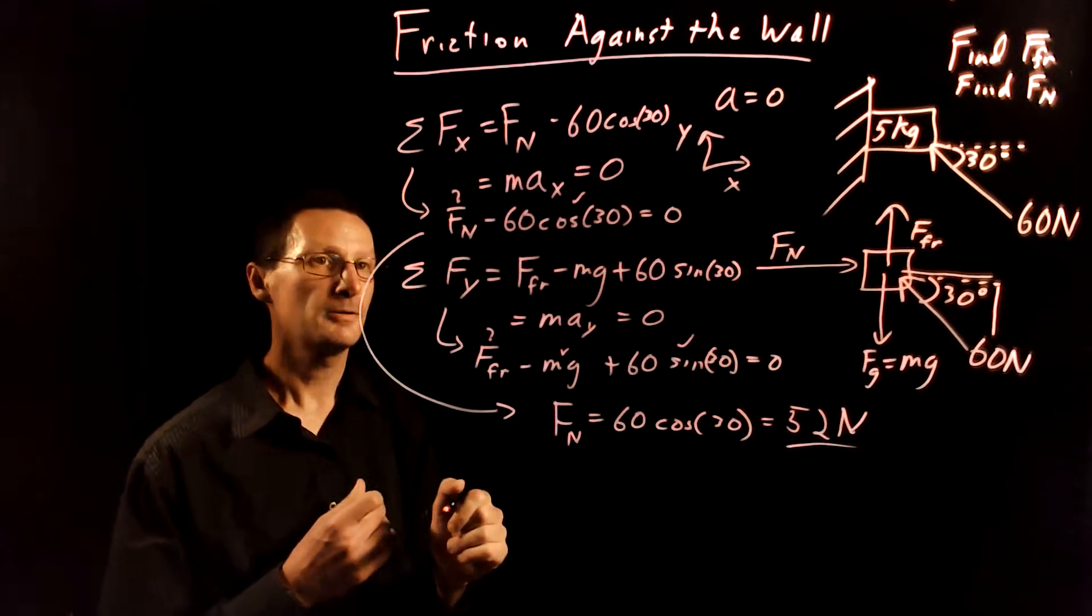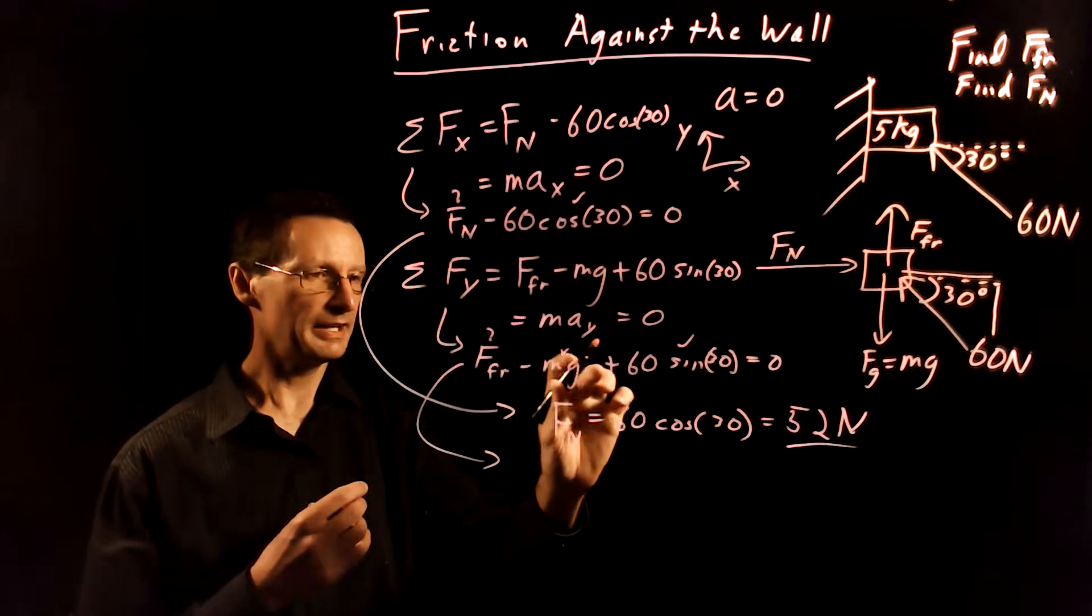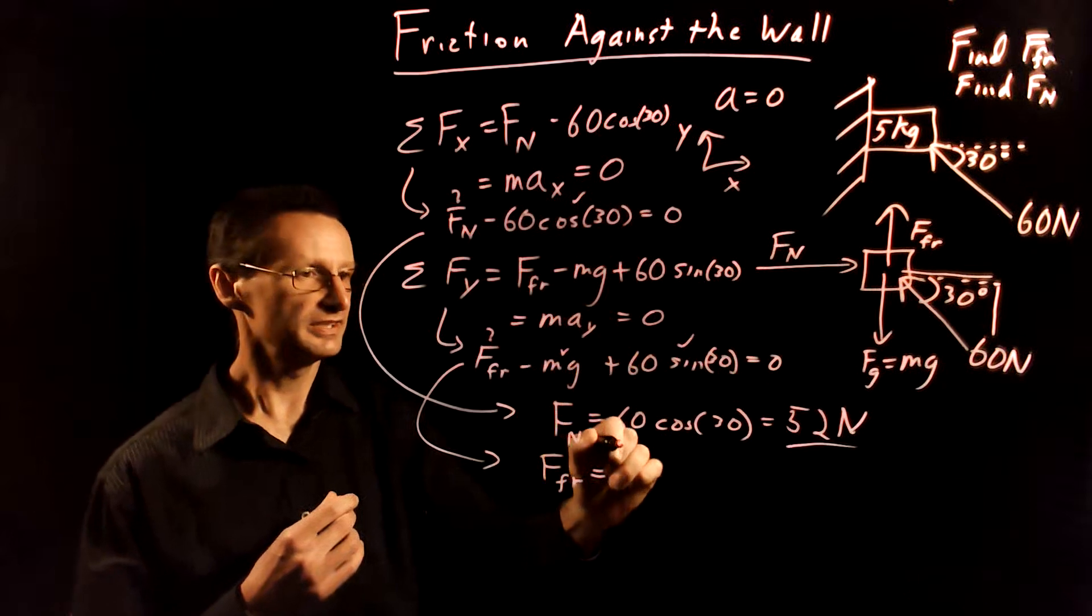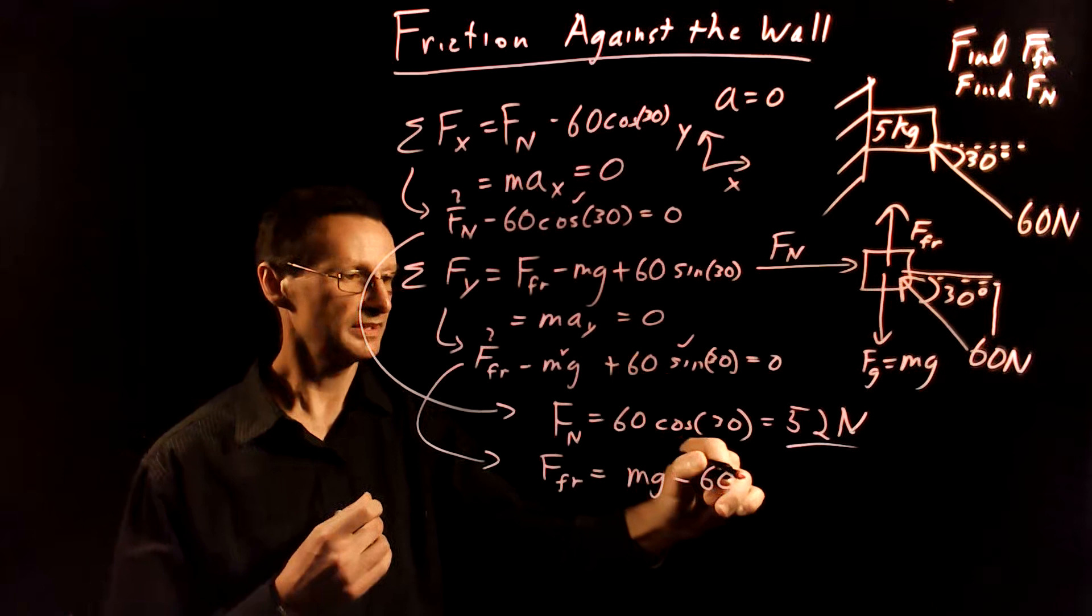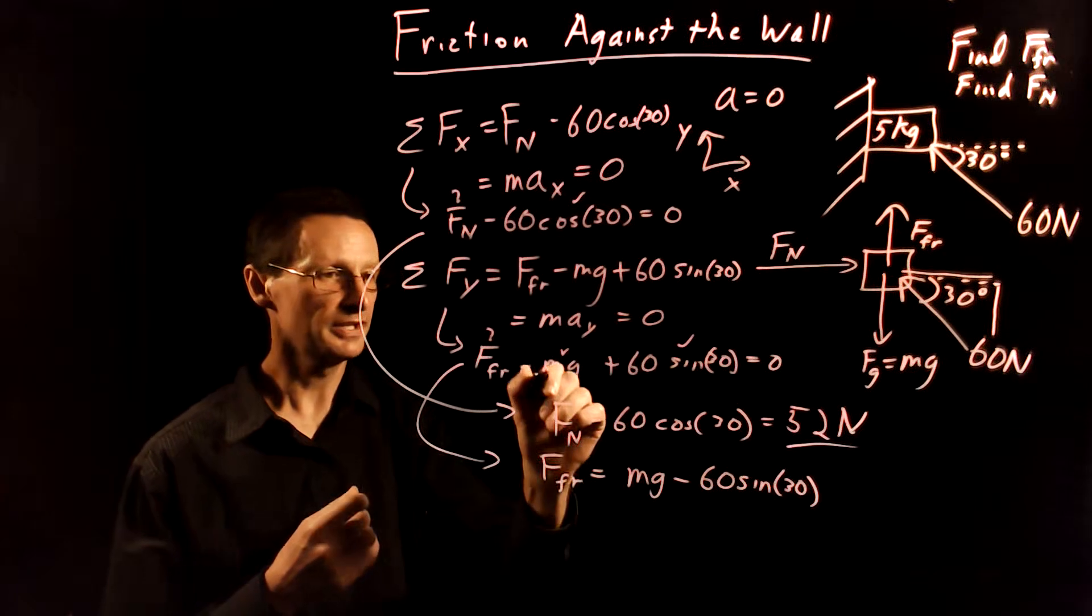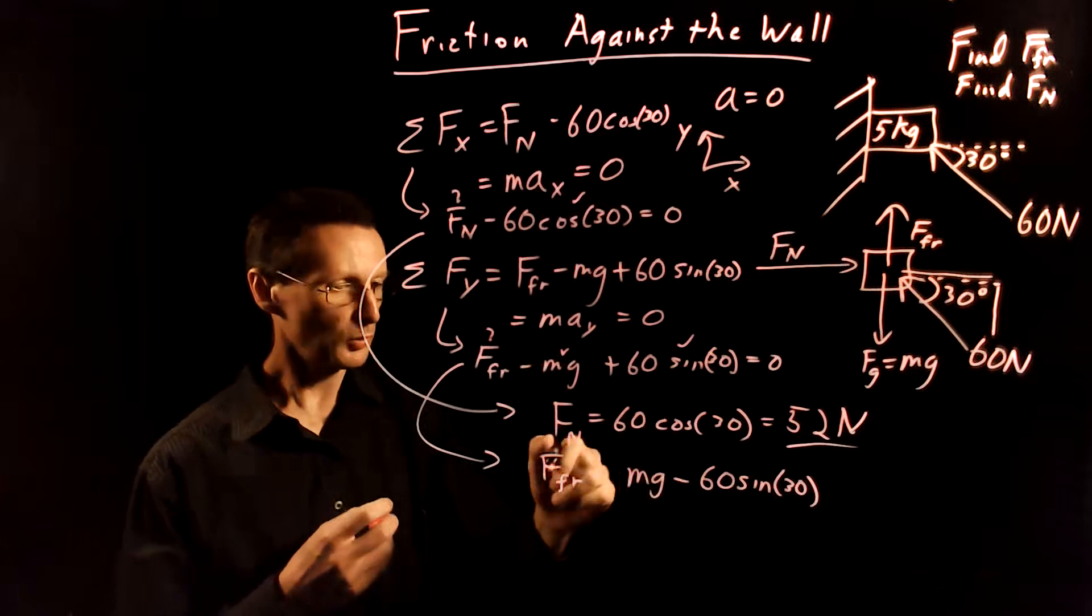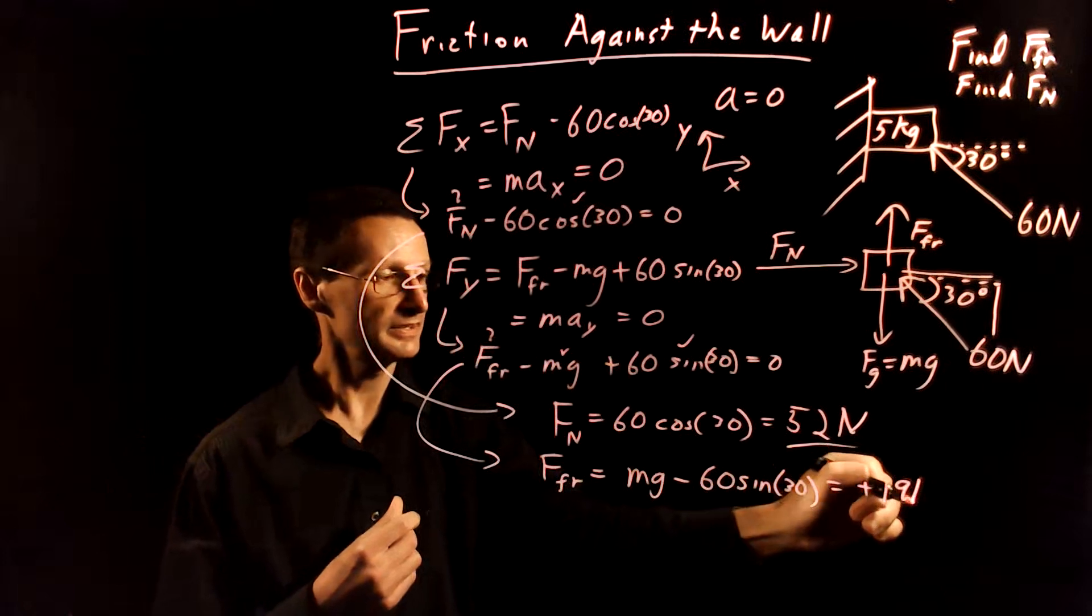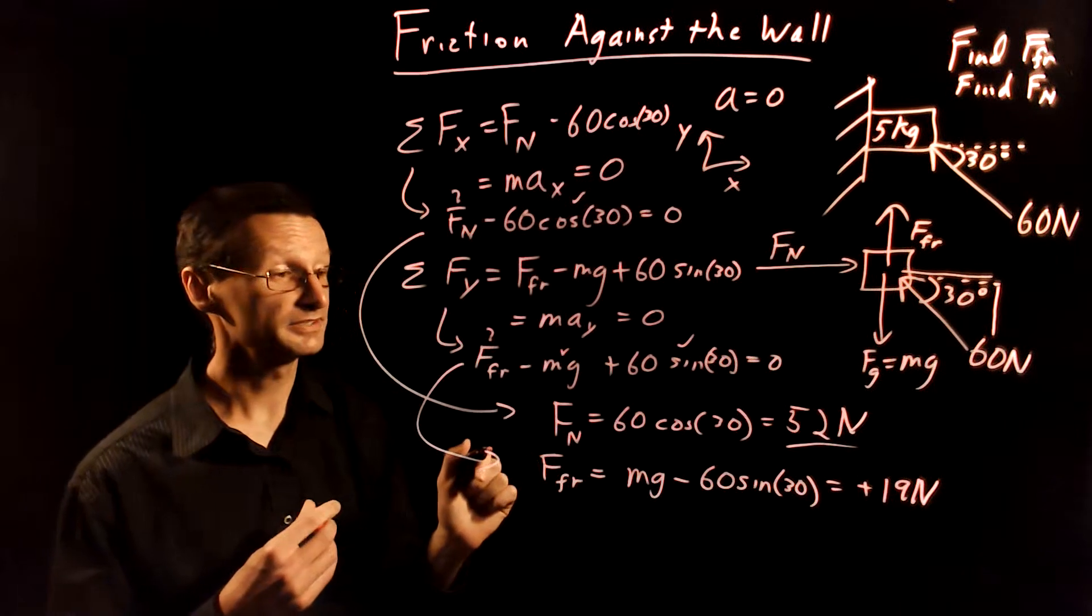Okay all right and then let me go ahead and use algebra to solve for this one. I'm going to add mg and subtract 60 sine 30 from both sides and that will give me the force of friction is equal to mg minus 60 sine 30, right, because the 60 is positive here when I put it on the other side it becomes negative. Negative mg becomes positive mg. All right so I went ahead and punched this in my calculator too before and I found it to be a positive 19 newtons. So since it's positive that means indeed the frictional force does point up like that so that's good.